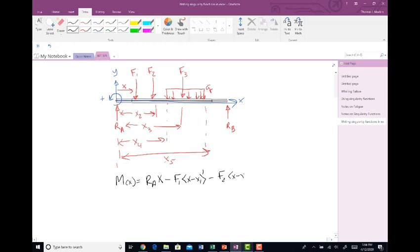minus F3 x minus x3 to the first power minus Q over 2 x minus x4. That's going to be to the second power and then I have to turn it off once I go beyond x5.